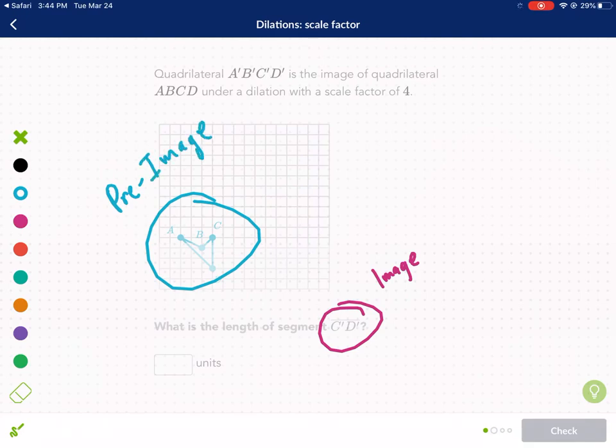And we know that the scale factor is 4. So we multiply the pre-image times 4 to get the image. So if we're asked to find C'D', then we need to find the length of CD.